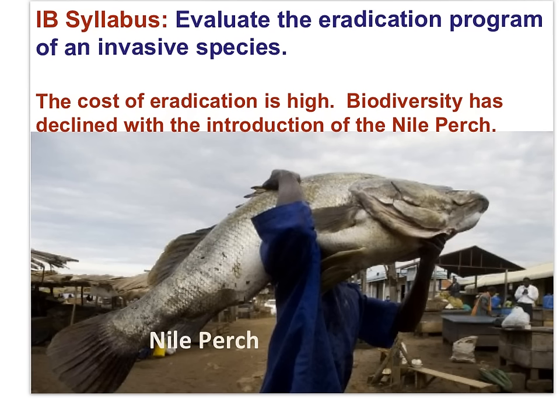The Nile perch is a dominant predatory fish. They reproduce in large numbers, with the potential of 16 million eggs in one reproductive episode. As a predator, the Nile perch feeds on its own species as well as others, including crustaceans, mollusks, and insects. As the fish grows, it is able to prey on fish of different sizes, and thus can have a catastrophic effect on many species that it encounters as it moves from area to area in search of food.